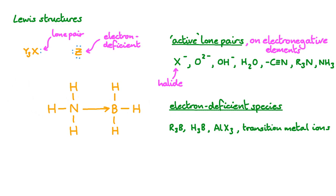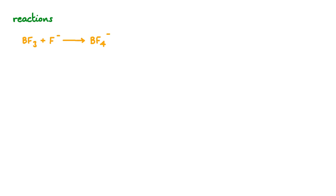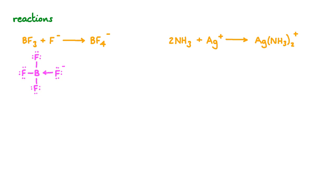Now let's have a look at some examples in reactions. BF3 can react with F- ions, forming BF4-. If we draw the Lewis structures, we can easily see where the lone pair that forms the bond comes from — the fluoride ion with its reactive lone pair forms a bond with the electron-deficient boron. And here's an example where we have a transition metal ion, silver+, reacting with a Lewis base, ammonia. The lone pairs on the nitrogens of the ammonia molecules form bonds with the silver. This particular chemical is active in the Tollens reagent test for aldehydes, where we produce a silver mirror. Lewis acids and bases are also very important in organic synthesis.